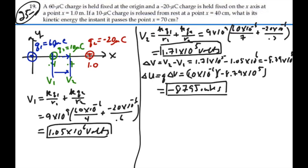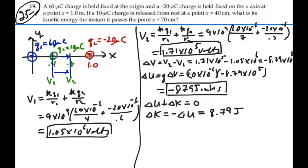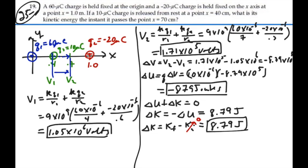We want to find the kinetic energy when the charge passes x equals 0.7. We know that the change in potential energy plus the change in kinetic energy equals zero. So the change in kinetic energy equals the negative of the change in potential energy, giving positive 8.79 joules. Since the charge started from rest, the initial kinetic energy is zero, so the final kinetic energy equals 8.79 joules. That's our answer.